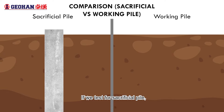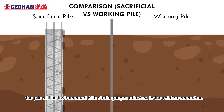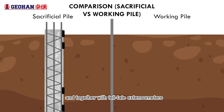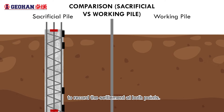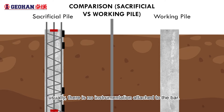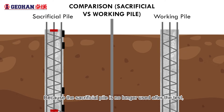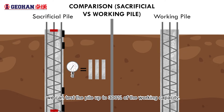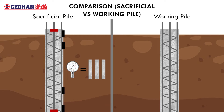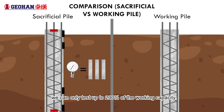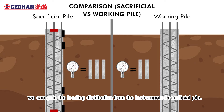If we test for a sacrificial pile, the pile will be instrumented with strain gauges attached to the reinforcement bar, and together with tell-tale extensometer meters on top and at the bottom of the test pile, to record the settlement at both points. For a working pile, usually there is no instrumentation attached to the bar. Because the sacrificial pile is no longer used after the test, we can test it up to 300% of the working capacity. But for the working pile, we can only test up to 200% of working capacity. Lastly, we can gain the load distribution from the instrumented sacrificial pile.